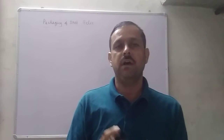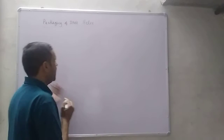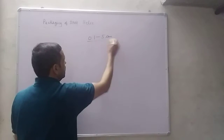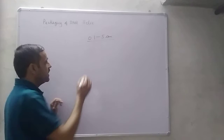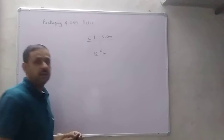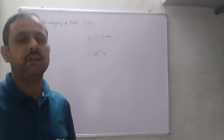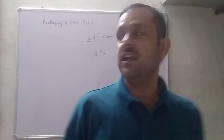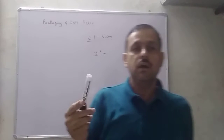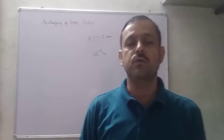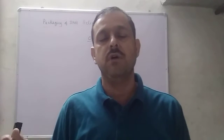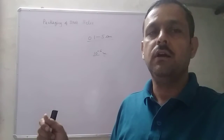अब अपन देखते हैं कि एक cell की size जो है वो 0.1 से 5μm तक होती है। और nucleus की size 10 to the power minus 6 meter होती है। तो यूकैरियोटिक cell में जो nucleus present होता है, उसकी normal size 10 to the power minus 6 meter होती है।